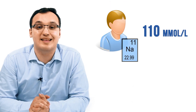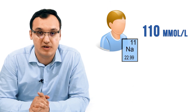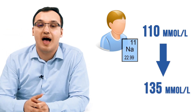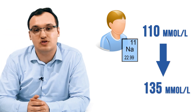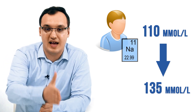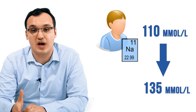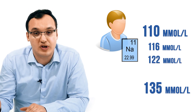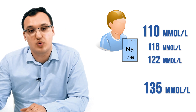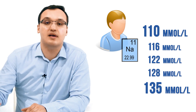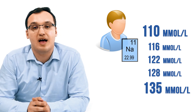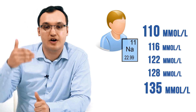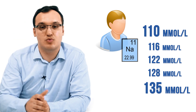For example, if the patient has a level of 110 millimole and we need to reach 135, which is the normal range — how many days will it take? On day one it's 110, then 116, then 122, then 128, then 134, and so on. We increase it day by day by a maximum of 6 millimole.